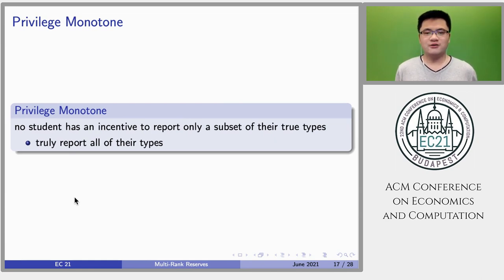The last property is privilege monotone. We say a choice function is privilege monotonic if no student has an incentive to report only a subset of their true types.